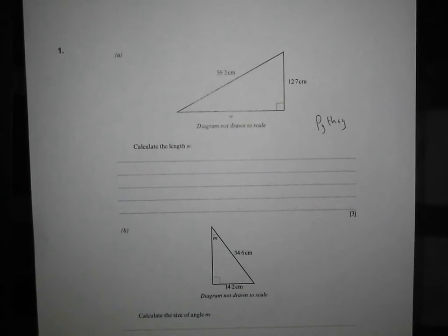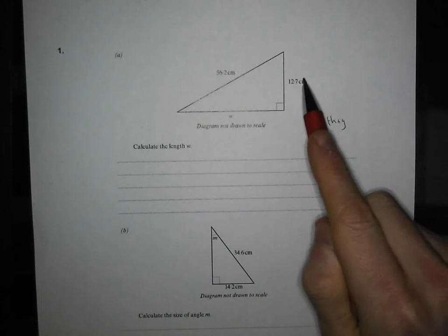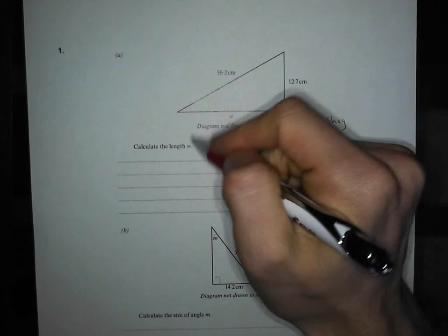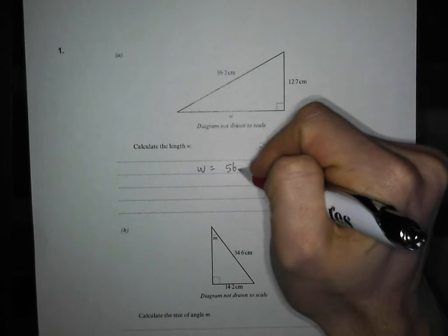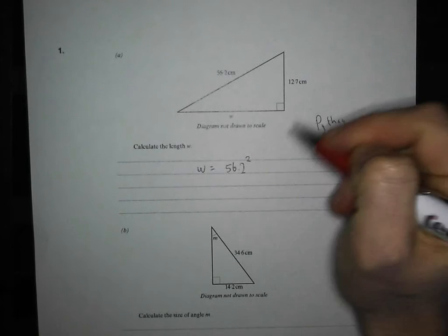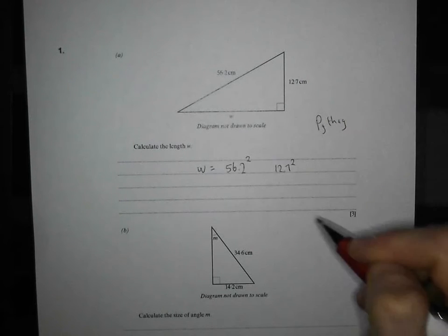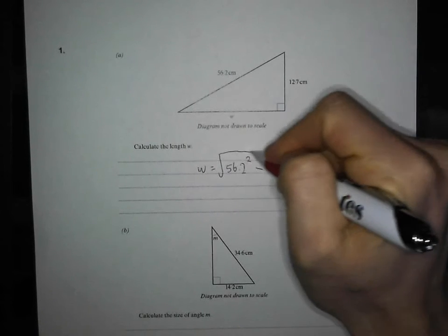So I say to my students, square it, square it, subtract it, square root it. So I'm going to write it down. W equals 56.2 squared minus 12.7 squared, square root the whole thing. And that's all you need to do.